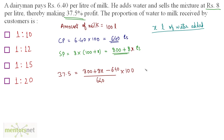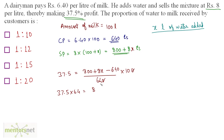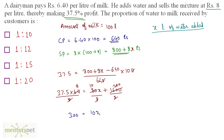Cancelling the zeros, we get 37.5 times 64 equals 8x plus 160. Multiplying through, we get 80x plus 1600. Dividing both sides by 8: 37.5 times 8 gives 300, equals 10x plus 200. Therefore x equals 300 minus 200 divided by 10, so x equals 10. The amount of water added is 10 liters.